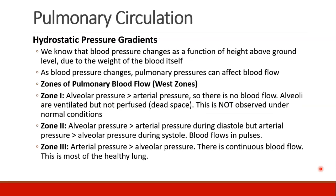Next we'll discuss the hydrostatic pressure gradients. Blood pressure changes as a function of height above ground level, due to the weight of the column of blood itself. As blood pressure changes due to hydrostatics, pulmonary pressures can affect blood flow. These are called the zones of pulmonary blood flow, or the West zones. This is a common concept in physiology and it is tested, so we will spend a few minutes discussing it.